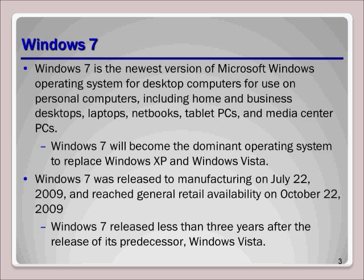Windows 7 is the newest version of the Microsoft Windows operating system. Windows 7 was released to manufacturing on July 22, 2009, and reached general retail availability on October 22, 2009, less than three years after the release of its predecessor, Windows Vista.